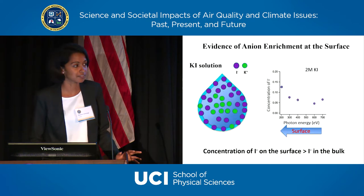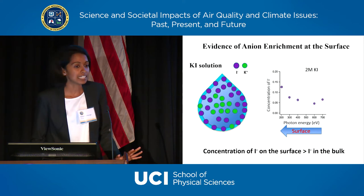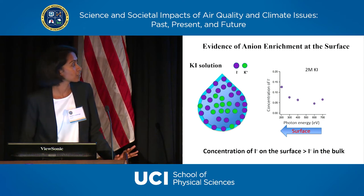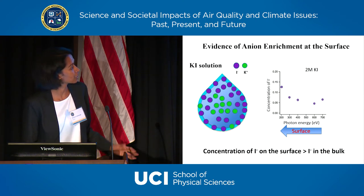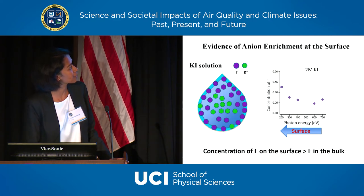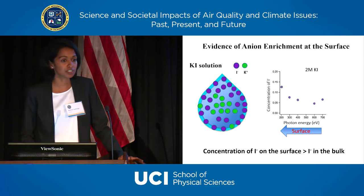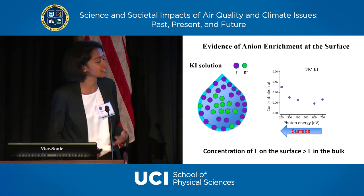As an example, I'll show some data collected on a potassium iodide solution. Potassium iodide dissolves in water and exists as positive potassium ions and negative iodide ions. When we did the experiments and calculated the concentration of iodine as a function of probe depth — that is, as a function of photon energy — we find the concentration of iodine at the surface is higher than in the bulk. This indicates an enhancement of iodine on the surface. We don't yet know why iodine comes to the surface, and Krista will explain the reasons behind the segregation of iodine to the surface.